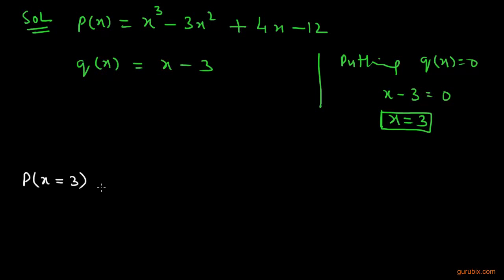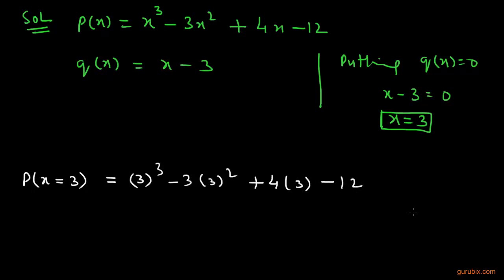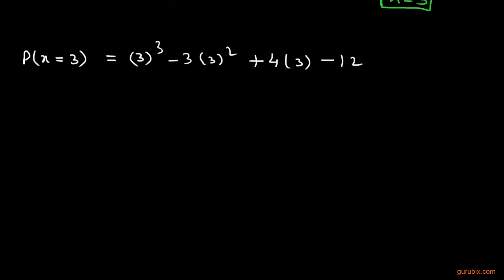Now we find the value of the polynomial p(x) at x equals 3. We substitute 3 in place of x: p(3) equals 3 cubed minus 3 times 3 squared plus 4 times 3 minus 12, which equals 27 minus 27 plus 12 minus 12.